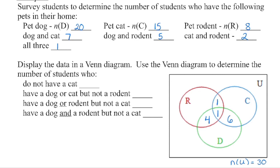We have 20 students in the dog category. This is the dog category, and sometimes it helps to put a small number 20 here just to stay organized. If we have 20 students in this green circle and we remove 4, 5, and 6, that's 11 students already in there — which means we're going to have 9 students who have only a dog.